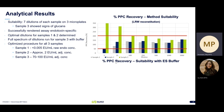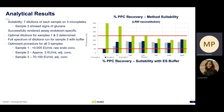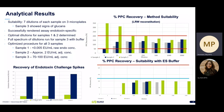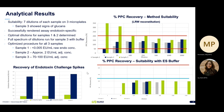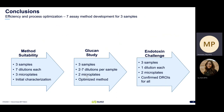Here you can see the percent PPC recovery using LRW to reconstitute the lysate. The 50 to 200% range is shown, and sample three is typically very high, which indicates glucan contamination. With the endotoxin-specific buffer, the PPC recovery is much lower for each sample. Here's a graph showing the recovery for endotoxin challenge spikes — each sample was challenged with a known amount of endotoxin concentration, and each was able to recover around what they were spiked at, within the 50 to 200% range expected for a biological assay.